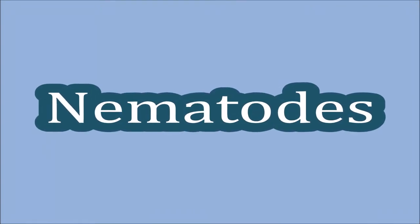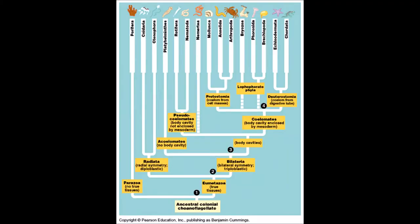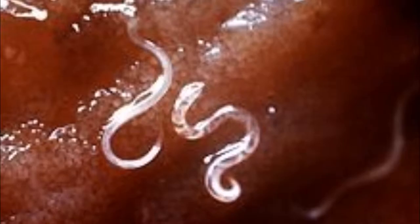Nematoda are known as roundworms and are bilaterally symmetrical worm-like organisms. This means that their bodies are divided down the middle and that each side looks exactly the same as the other. There are approximately 20,000 named species of nematoda. These species come in a variety of shapes and sizes.